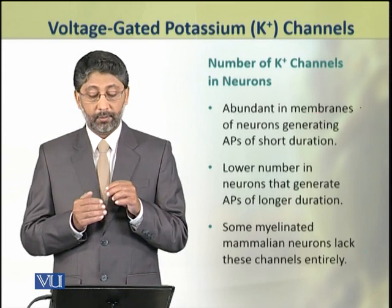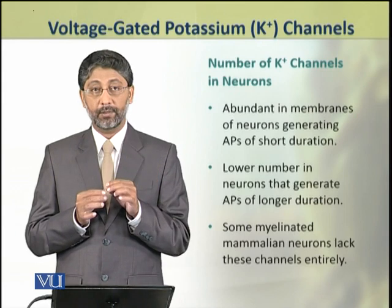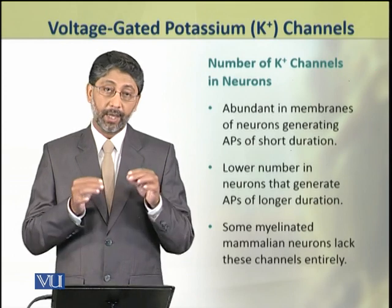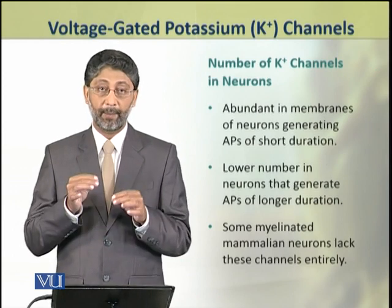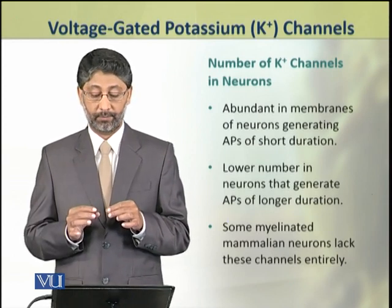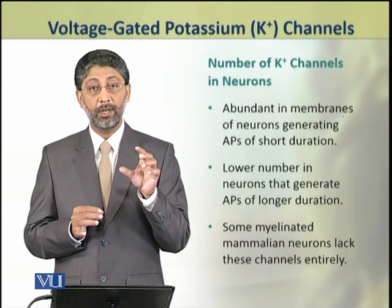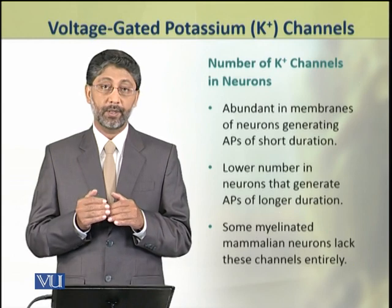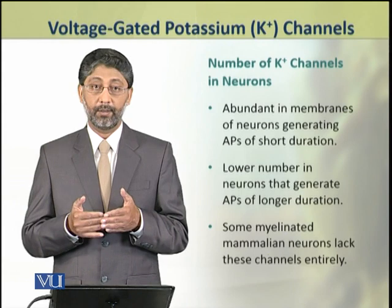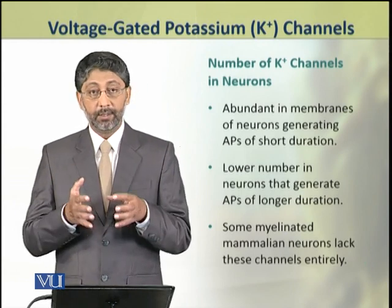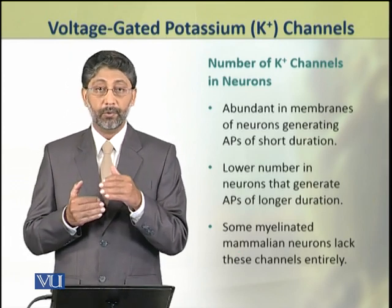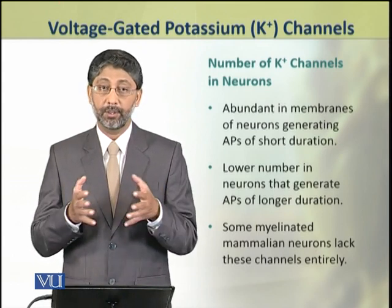Dear students, the number of potassium channels in different types of neurons also varies. They occur abundantly in those membranes which are involved in generating action potentials of shorter duration, while they are present in lower numbers in the neurons that generate action potentials of longer duration. They are even absent in some myelinated mammalian neurons that produce action potentials of very long duration.